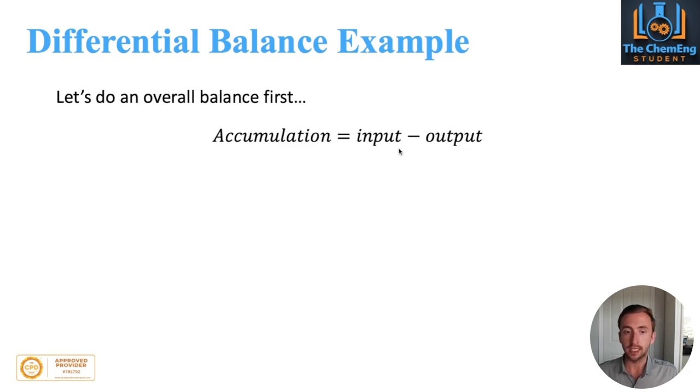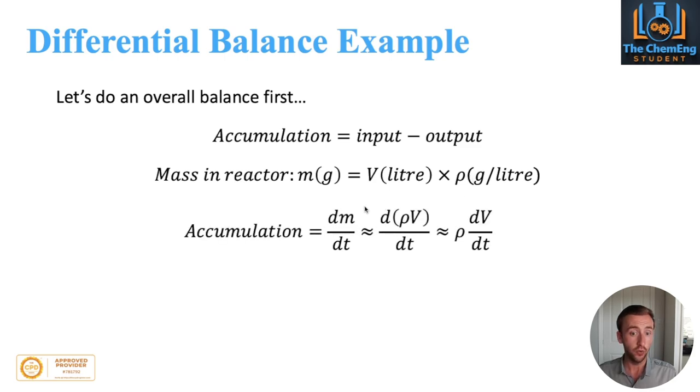We'll do the overall balance first. Accumulation equals what comes in minus what comes out. We have a CSTR, a continuous system. The mass of the reactor must be the volume of the reactor multiplied by the density of the fluids. Now we can express the accumulation in a few different ways. We can express it as dm/dt, but we don't have m, we have the volume and density. So we can replace dm with d(ρV).